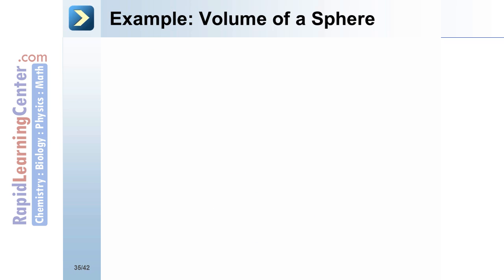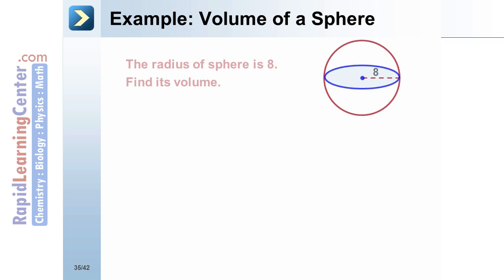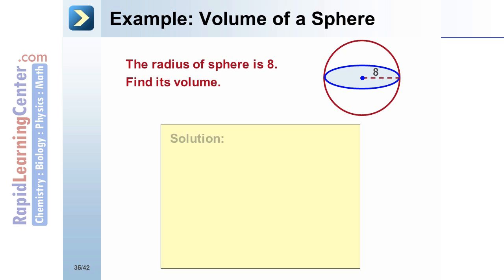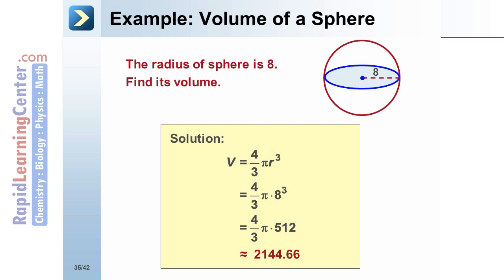Example: Volume of a sphere. The radius of a sphere is 8; find its volume. Substitute the radius into the volume formula: V equals four-thirds times pi times 8 cubed. Simplify to get the volume of the sphere, which is about 2,144.66.